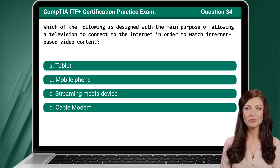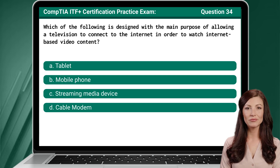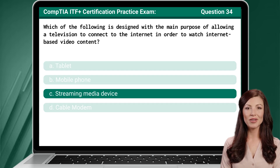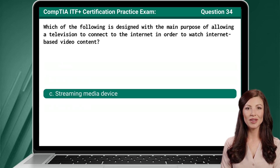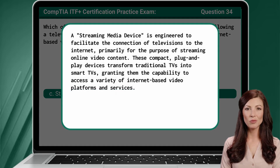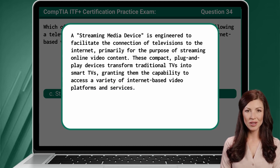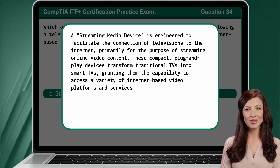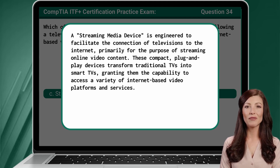Question 34. Which of the following is designed with the main purpose of allowing a television to connect to the internet in order to watch internet-based video content? The answer is C: Streaming media device. A streaming media device is engineered to facilitate the connection of televisions to the internet, primarily for the purpose of streaming online video content. These compact, plug-and-play devices transform traditional TVs into smart TVs, granting them the capability to access a variety of internet-based video platforms and services.